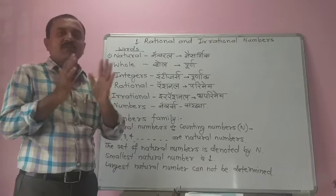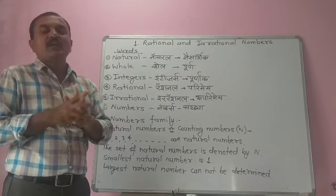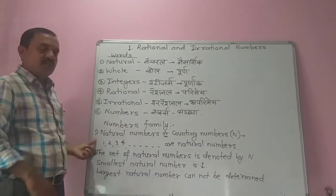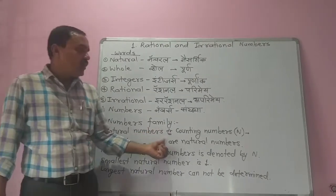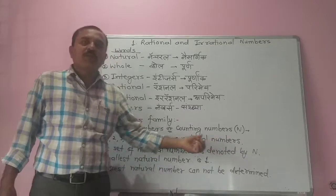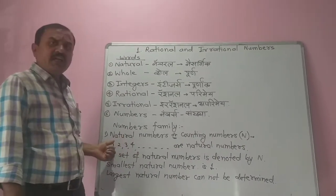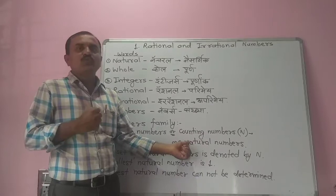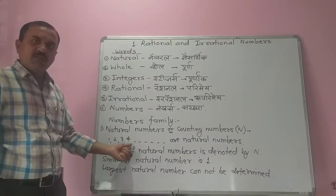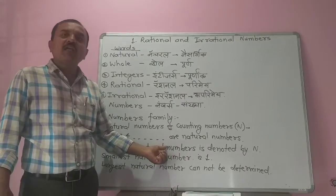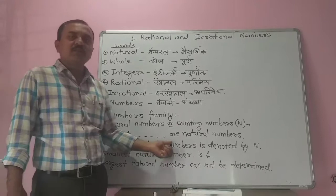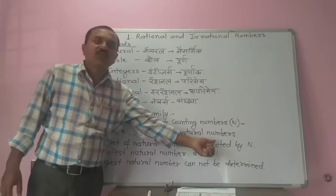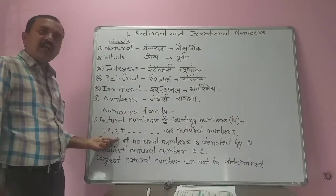The numbers family must be understood and distributed as follows. Out of that, first are the natural numbers or counting numbers which we have seen in the world. Natural numbers are counting numbers: one, two, three, four, dot dot dot infinite. These are natural numbers.